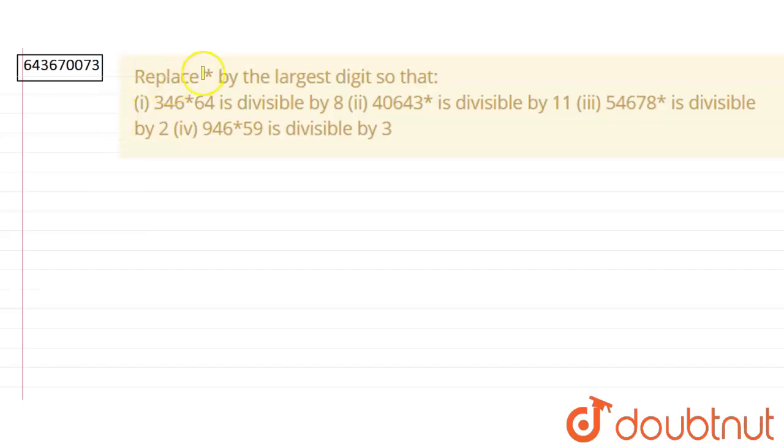So the first one is 346*64 is divisible by 8. We have to put a value at the position of asterisk so that this number is divisible by 8.